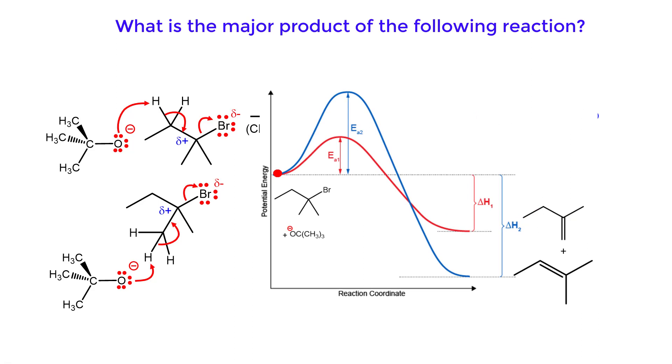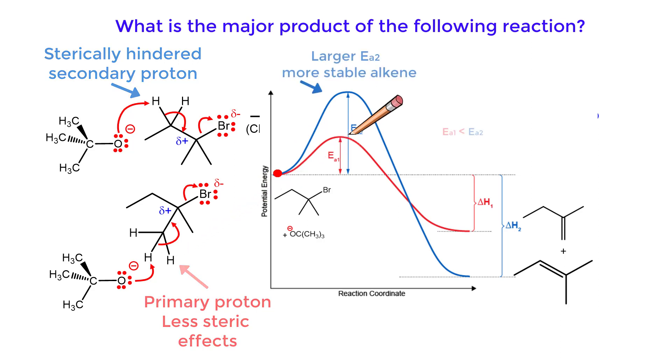Looking at the reaction coordinate potential energy diagram, we see that there is greater steric interaction between the base and the substrate in this transition state when the bulky base is abstracting a secondary proton compared with abstracting a primary proton.